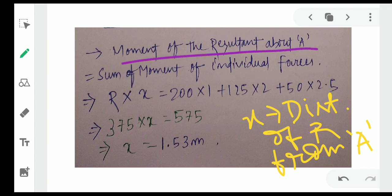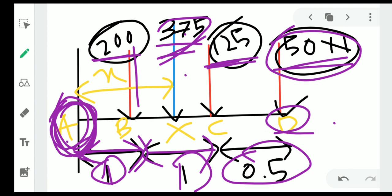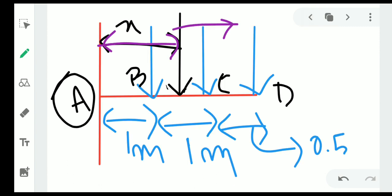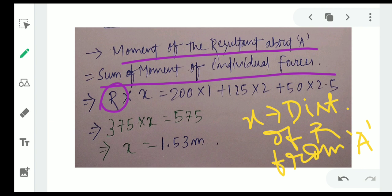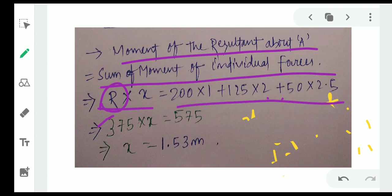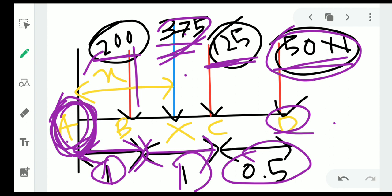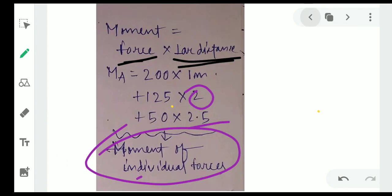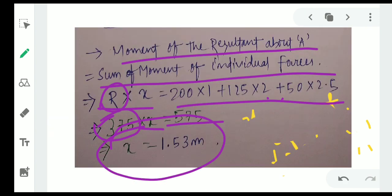The moment of the resultant equals R into x, where x is the perpendicular distance of the resultant from point A. According to Varignon's theorem, R × x equals the algebraic sum of the moments: 200×1 + 125×2 + 50×2.5 = 575 Newton-meters. So 375 × x = 575, which gives x = 1.53 meters (shown as 1.75 in calculation). The resultant force acts at a distance of approximately 1.53 meters from point A.